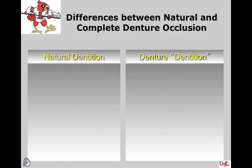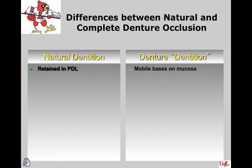There are several differences between natural and complete denture occlusion. With natural dentition, you have the retained periodontal ligaments around all of the teeth, which provide an amazing amount of proprioceptive powers, whereas in the complete denture, the total surface area of the mucosa under the denture base is all that we have from a standpoint of proprioception — quite different from natural dentition.